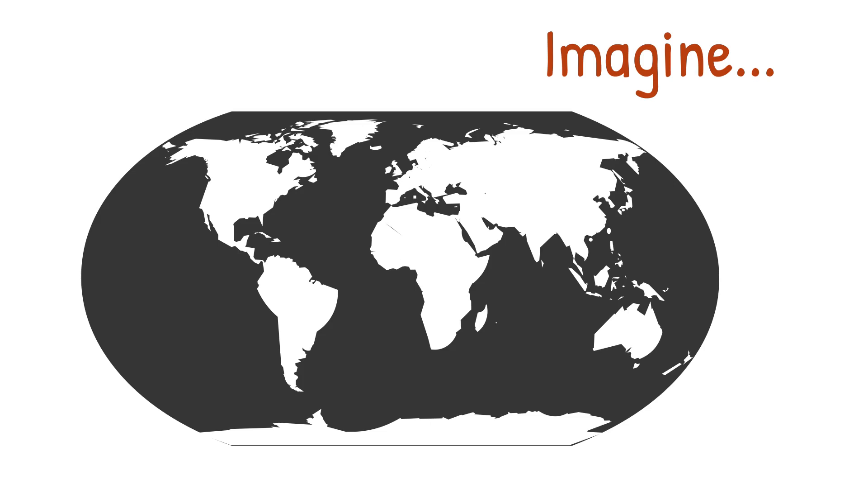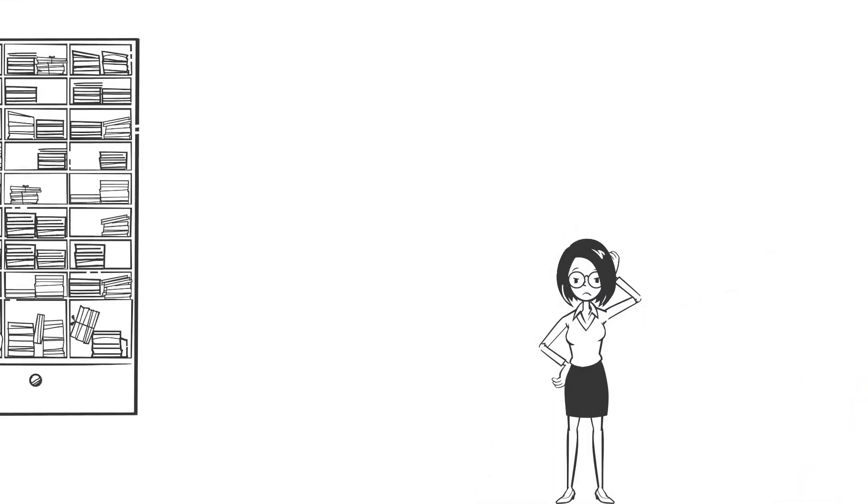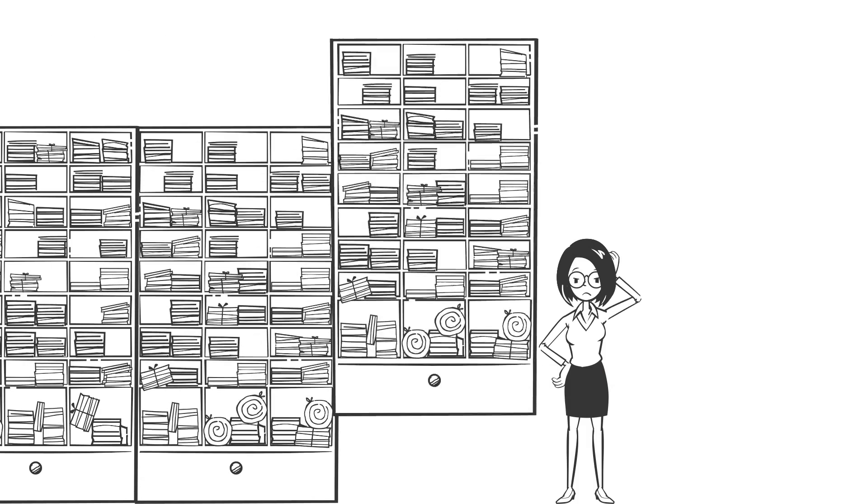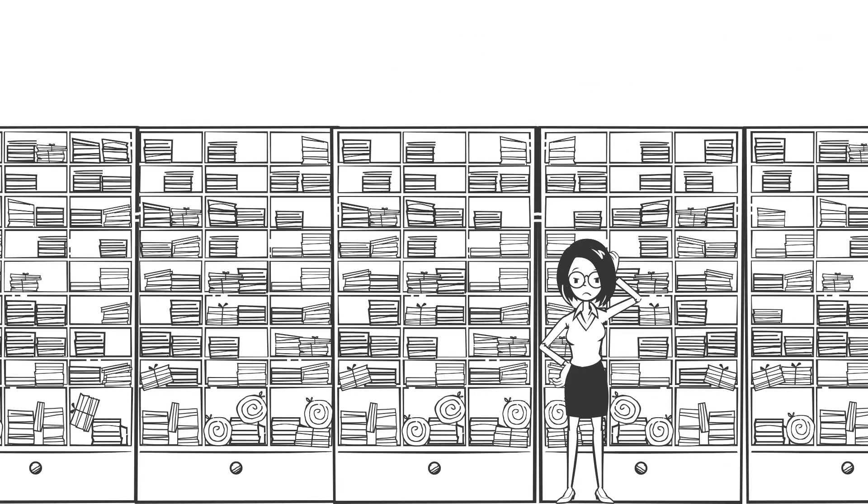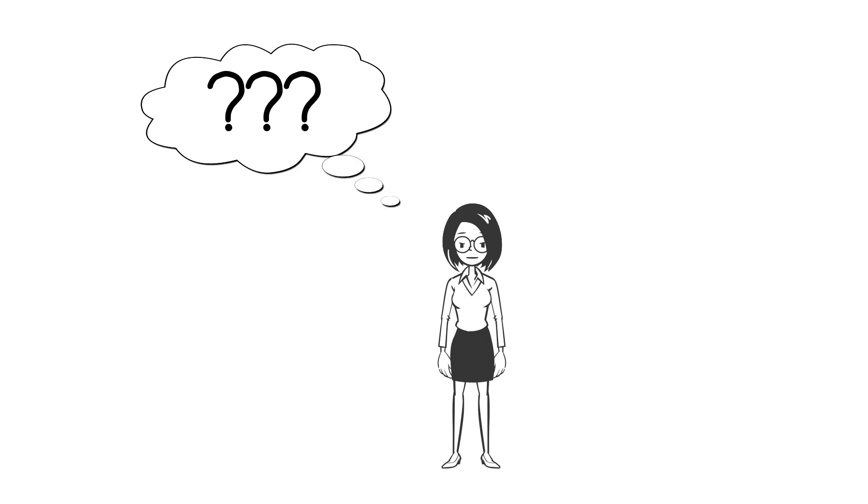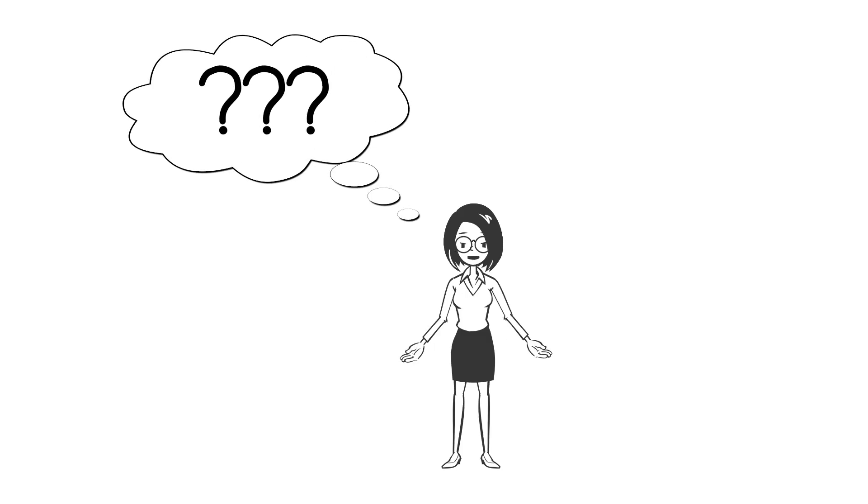Imagine just for a moment that you have the combined knowledge of almost all of mankind at your disposal. Imagine, however, if you had each item, each memory, stored somewhere separately in your brain with no way of understanding the contents or context of each of those things. It's kind of hard to think about, isn't it?